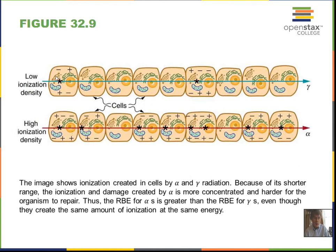Returning to relative biological effectiveness: if ionization occurs infrequently, as with gamma rays, it is less hazardous. Alpha particles can cause multiple ionizations in a single cell, creating so much disruption that the cell may not be able to repair itself, making alphas more dangerous.